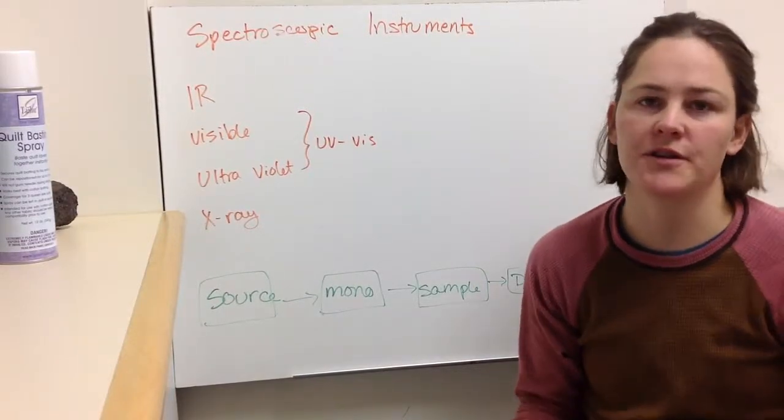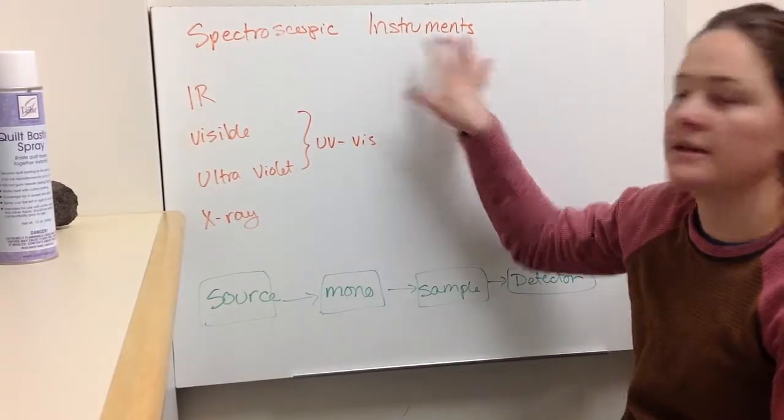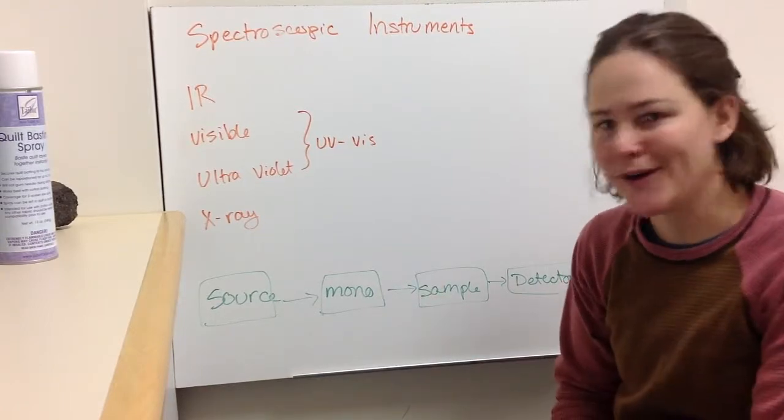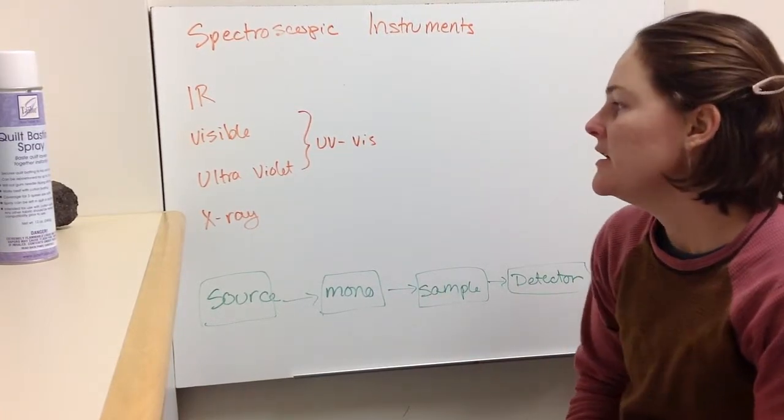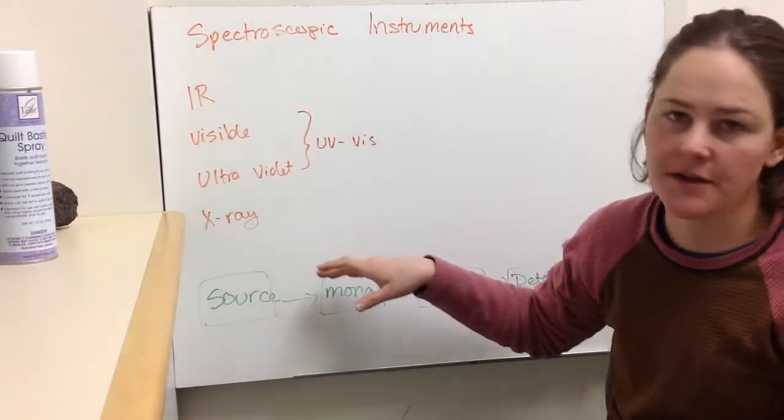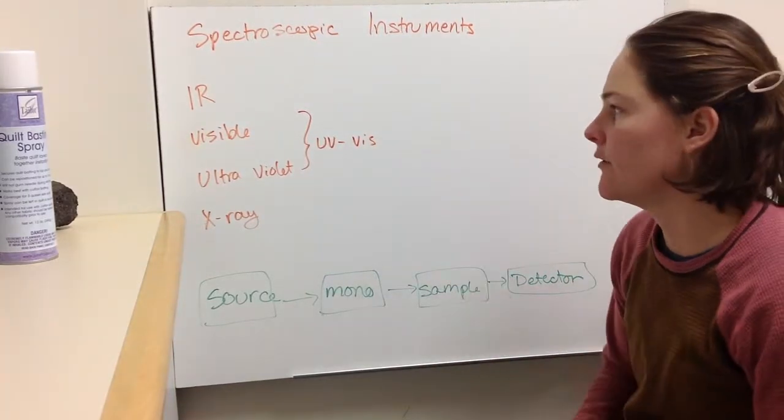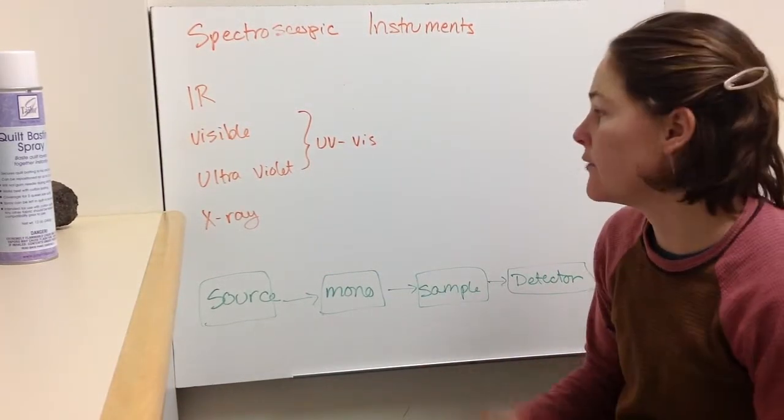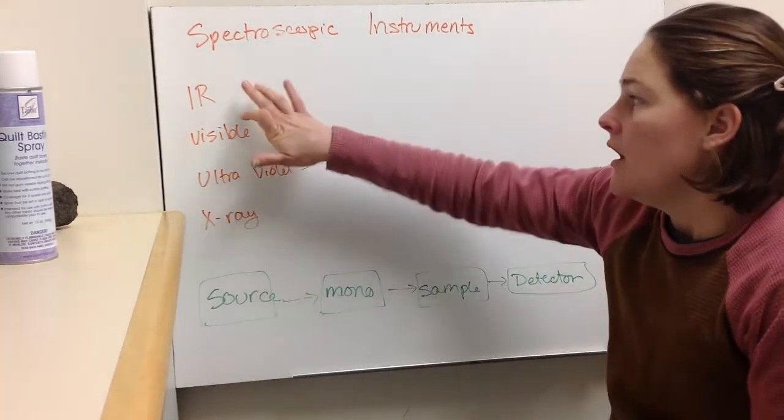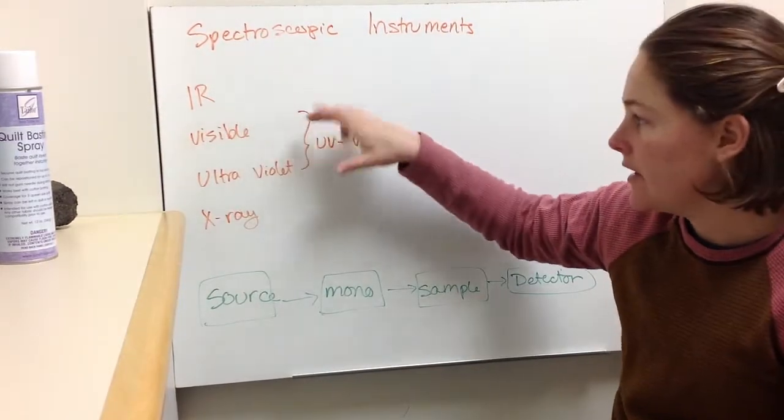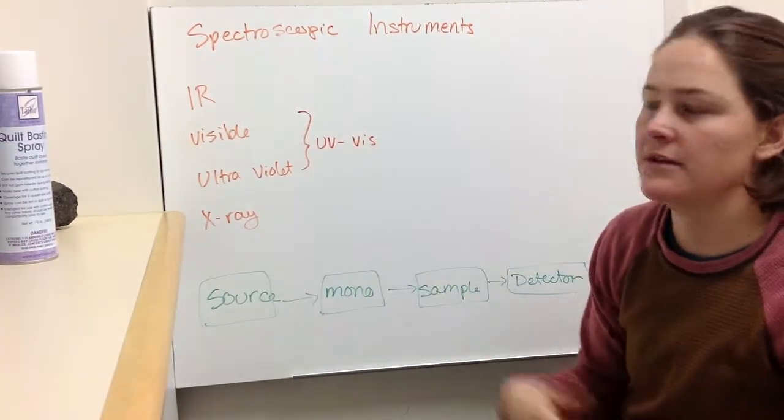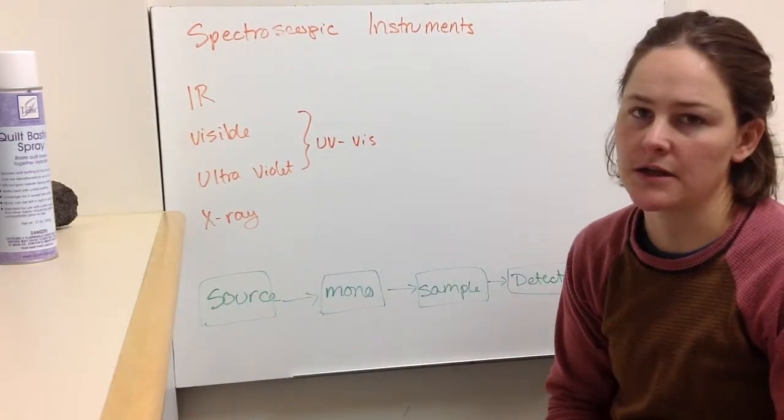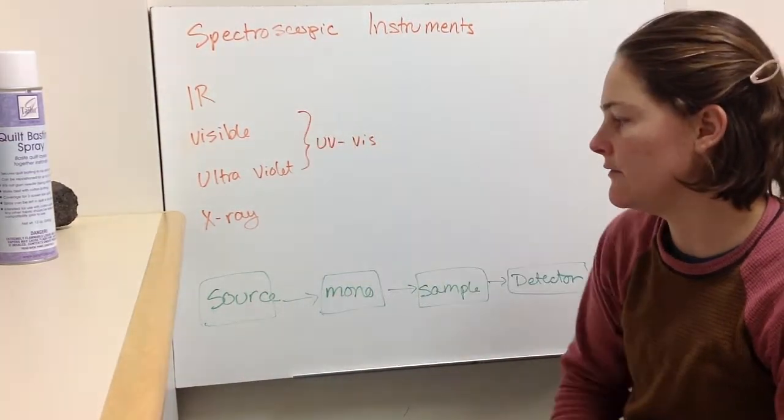All right, let's talk about some spectroscopic measurements and the instruments, like what's underneath the hood when you make a spectroscopic measurement. So you can do this for a bunch of different spectroscopies. I'm sure you can even do it for microwave for like weather, predicting weather. But we're going to talk about infrared, visible and UV ultraviolet, so UV-vis. And we might even get a little bit into some x-ray stuff, but we're going to really focus on the UV-vis.